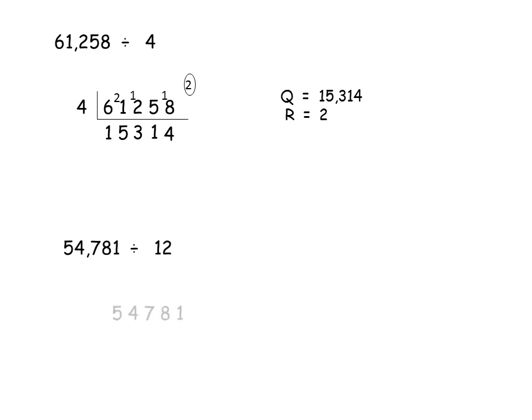Another example. 54,781 divided by 12. So, I wrote the dividend, drew the line below it and wrote the divisor 12 on the left. When I start dividing, 5 is smaller than 12. I can't divide so I put a 0 and take 54 together. 54 divided by 12 is 4. 12 4's are 48 and 54 minus 48 is 6.